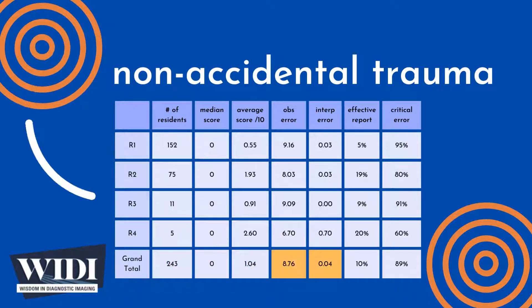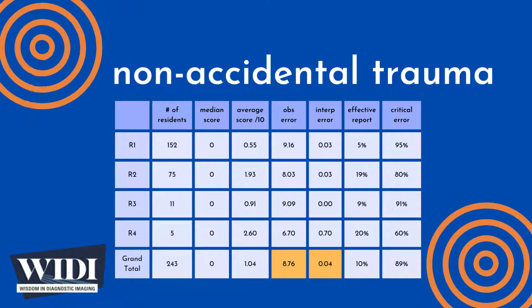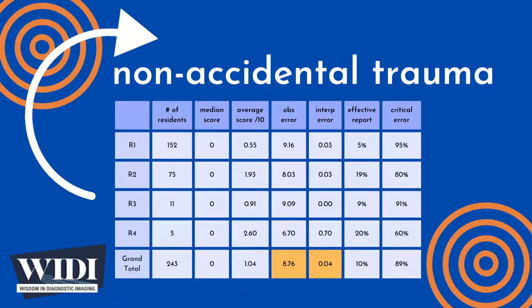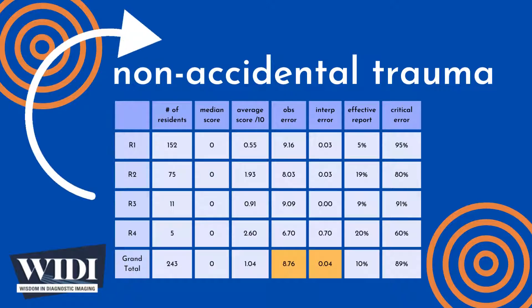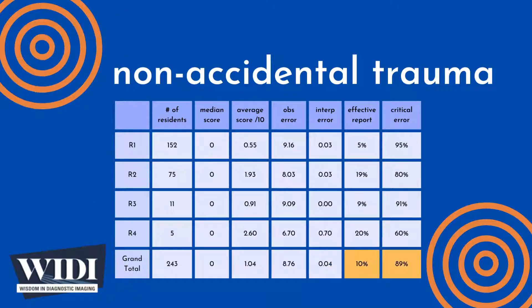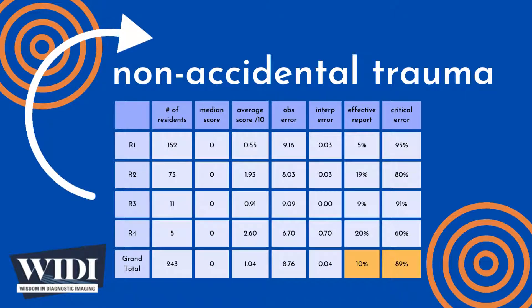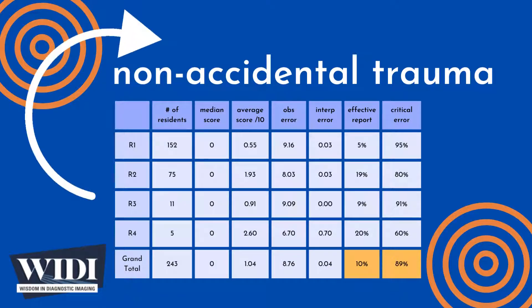Overall, the average number of points lost out of 10 due to observational discipline was 8.76. At the same time, 0.04 points were lost due to interpretive errors on the part of the residents. We define an effective report to be one which achieves scores between 7 and 10 — in terms of letter grades, this would be A and B. In this most missed case, 10% of residents produced effective reports.